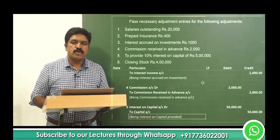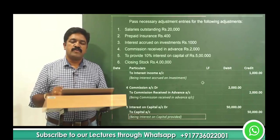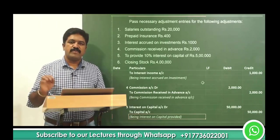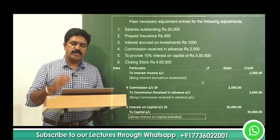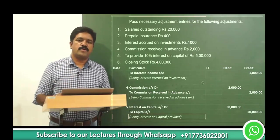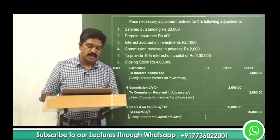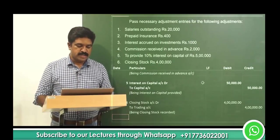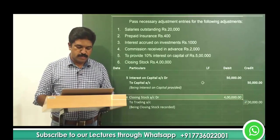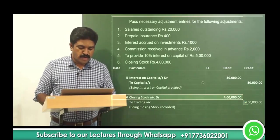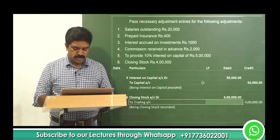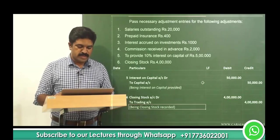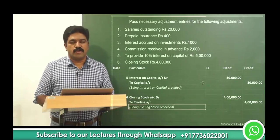Item 6 is closing stock. Closing stock is an asset, so it will be debited. The credit is parked in the trading account, so trading account will be credited. Closing stock account is debited by 4 lakhs and credit goes to trading account 4 lakhs — being closing stock recorded.